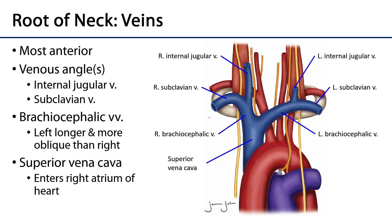Now for a quick high-level review of the neurovasculature. The internal jugular veins drain blood from the brain and neck. The subclavian veins drain the upper limbs, brain, neck, and thorax. Where these meet is the venous angle, and they combine to form the brachiocephalic veins. The right brachiocephalic is shorter and more vertically oriented; the left is longer and more obliquely oriented. Together they form the superior vena cava, which delivers blood from the region superior to the diaphragm into the right atrium of the heart.